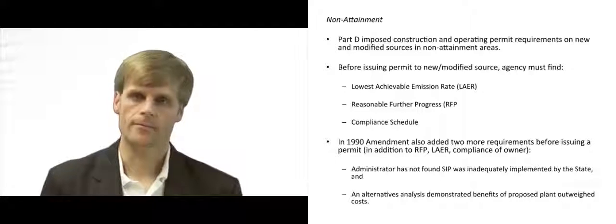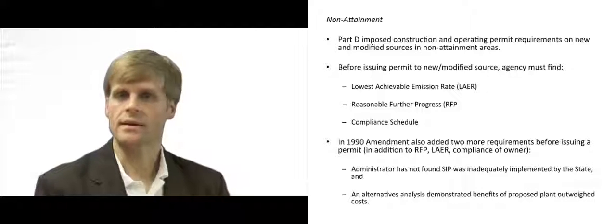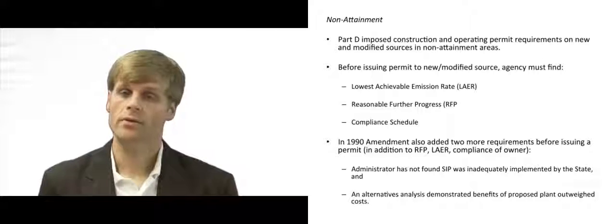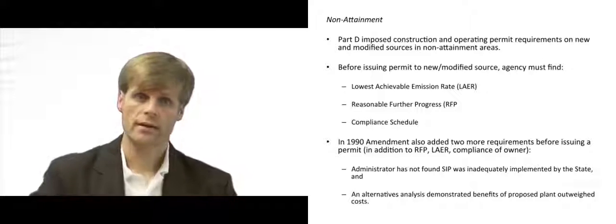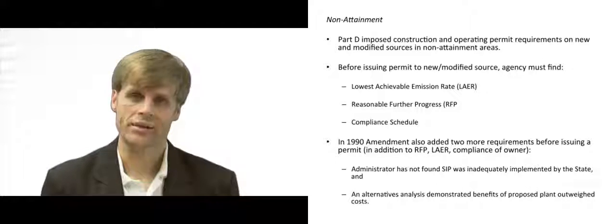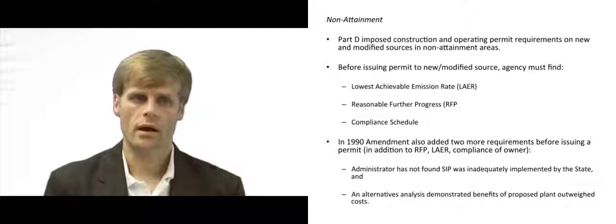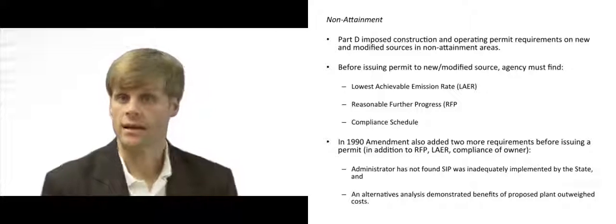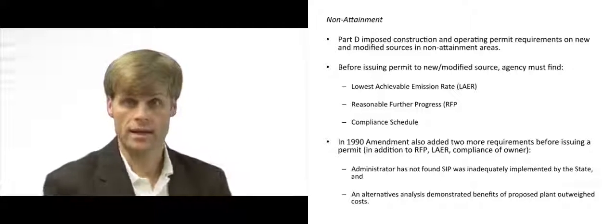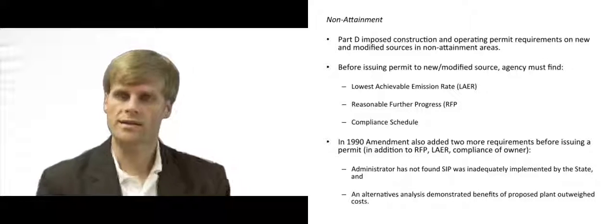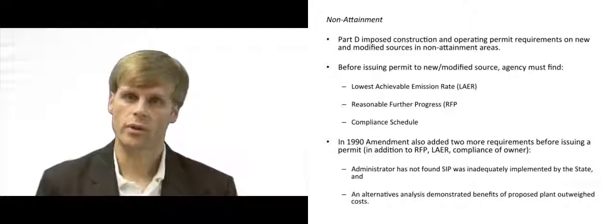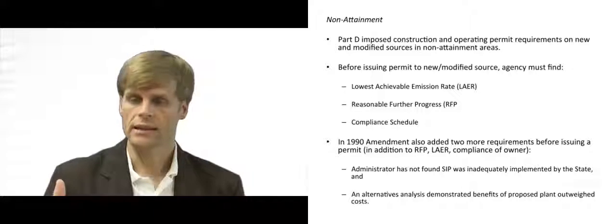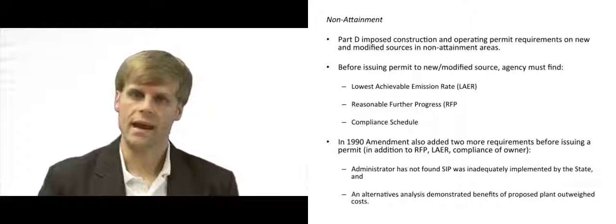The lowest achievable emission rate is identified by the EPA per these ambient air quality standards. So the new source has to be very efficient and put forward a justification that it can meet these standards. It also has to show reasonable further progress — that bringing this new source online, taken together with all other sources of pollution or production in the area, is going to move forward with achieving the air quality standards or the standards laid out in the state implementation plan. In no event can the state implementation plan standards be less than the air quality standards, but they could be set higher. You have to be able to demonstrate a reasonable path forward for achieving these standards, either through lessening of pollutants or some other plan.